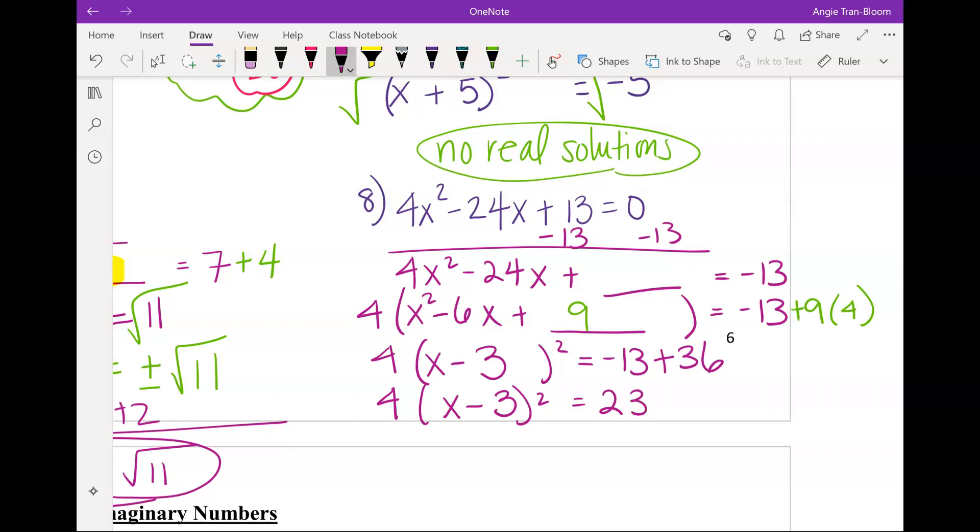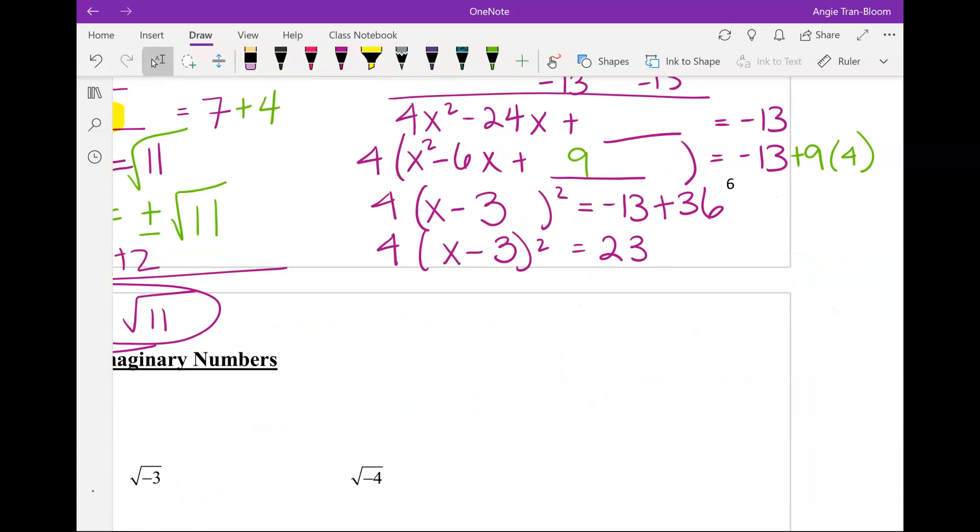So, now solve for X normally. What's your next step, y'all? We want to isolate. Divide both sides by 4. Yep. Divide both sides by 4. Is 23 divisible by 4 evenly? No. So, we would totally leave it as a fraction. Don't try to change it into decimals. Leave it. Now, we're going to take a square root to both sides.